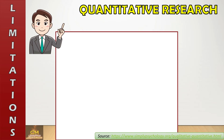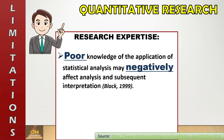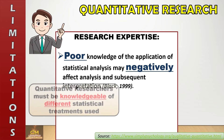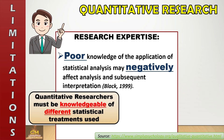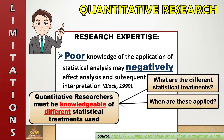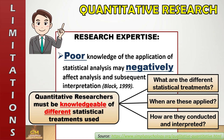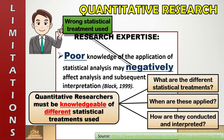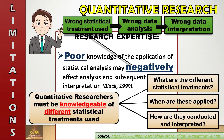Another limitation of quantitative research is research expertise. Poor knowledge of the application of statistical analysis may negatively affect analysis and subsequent interpretation. This is according to Black in 1999. Whenever a researcher conducts quantitative research, he must be knowledgeable of the different statistical treatments used. He must be able to answer: what are the different statistical treatments, when are these applied, and how are they conducted and interpreted? This is a limitation because when a researcher uses the wrong statistical treatment, it might lead to wrong data analysis, wrong data interpretation, and render the results totally invalid.